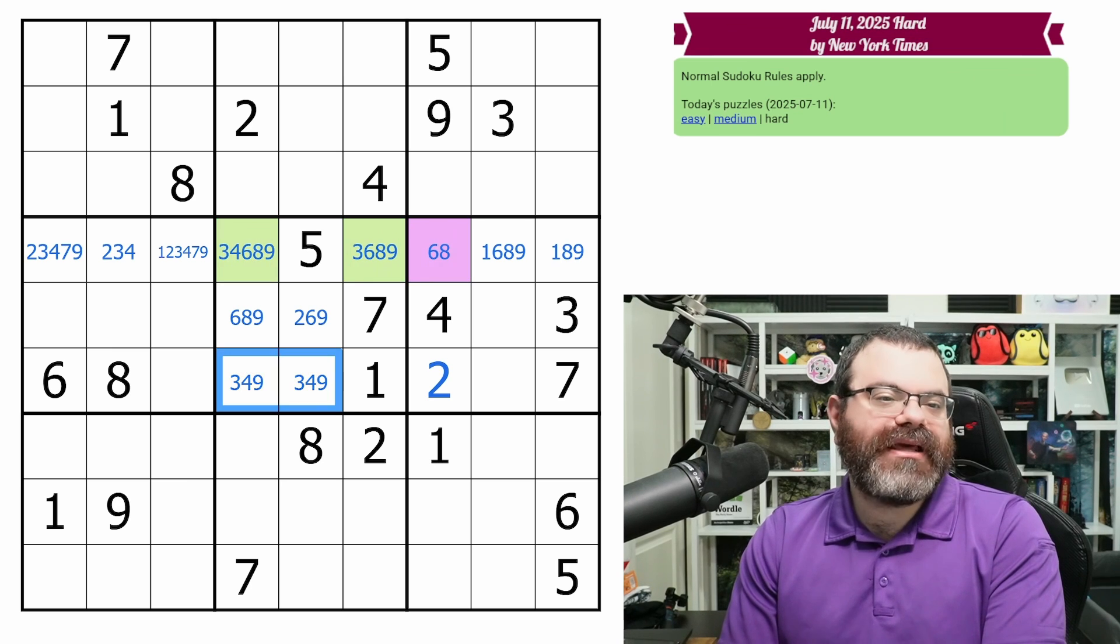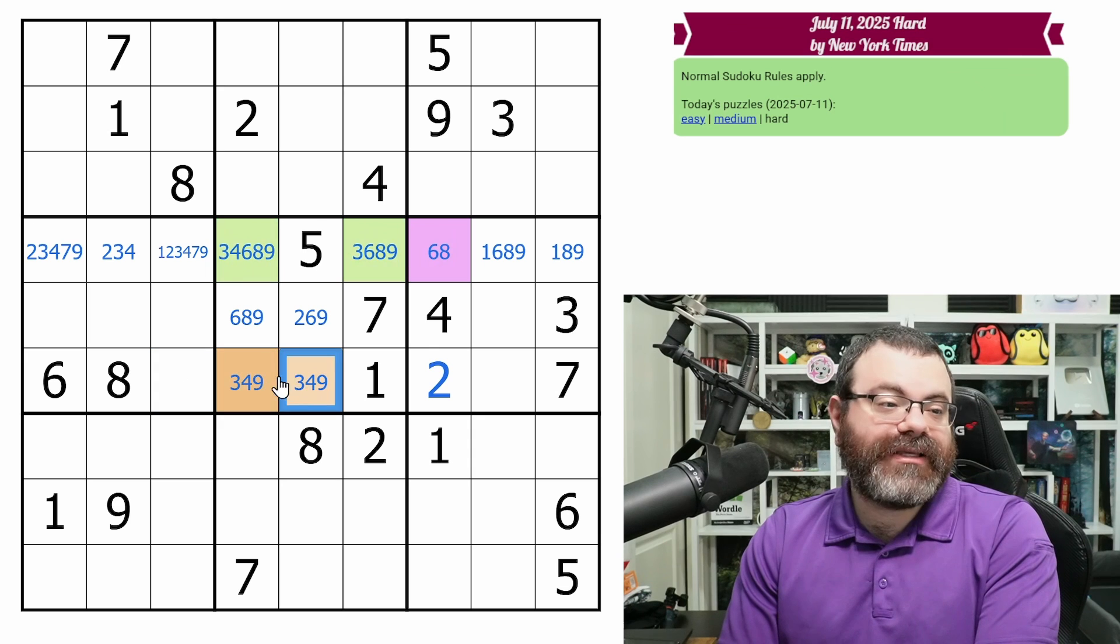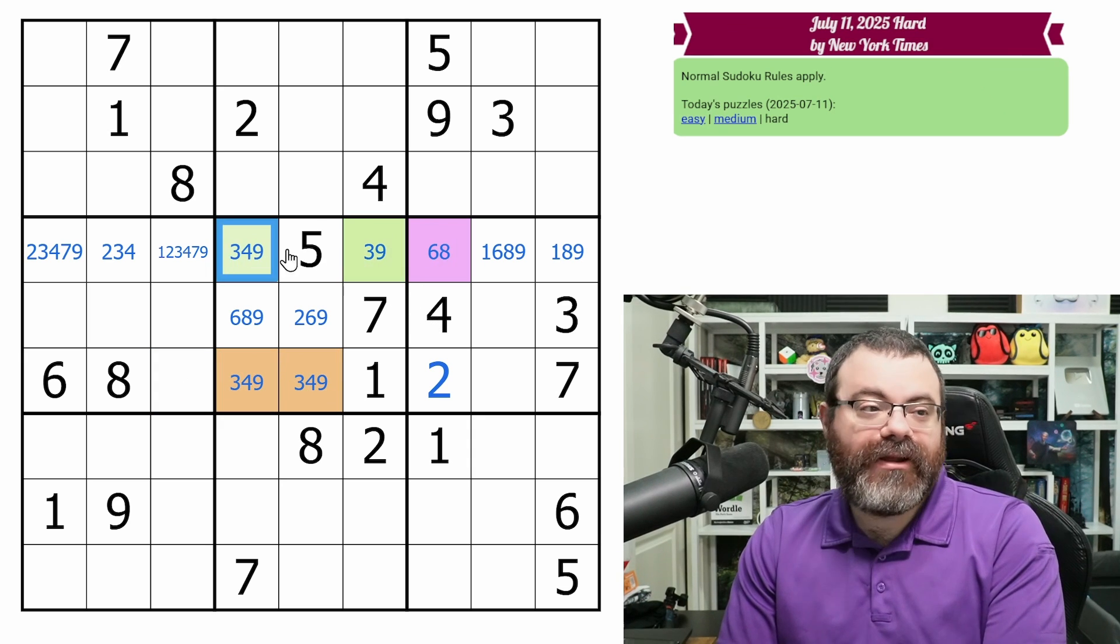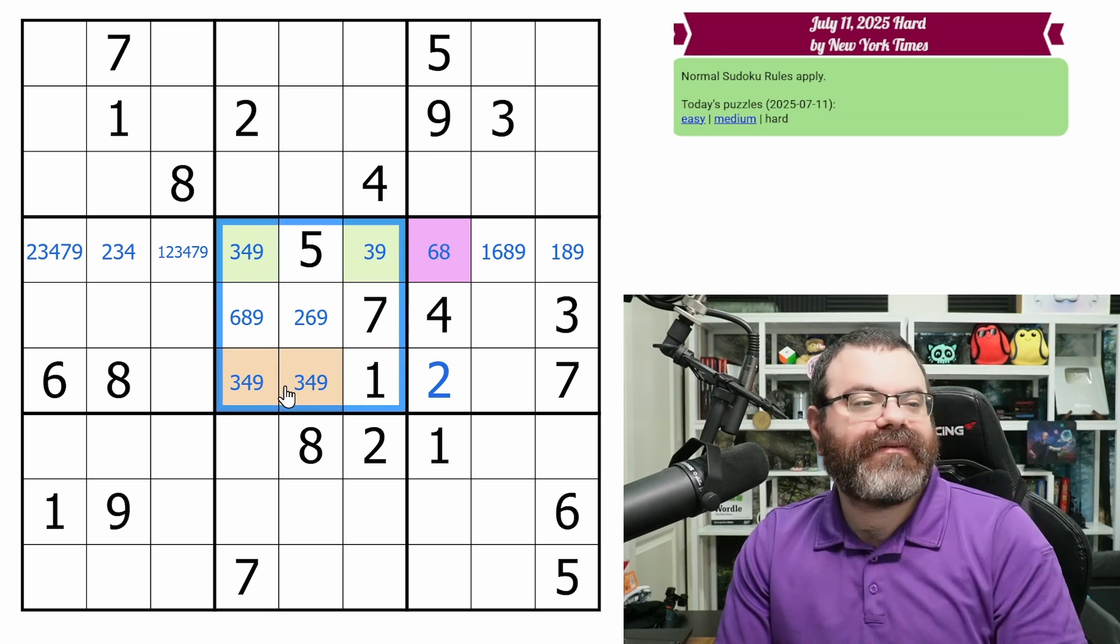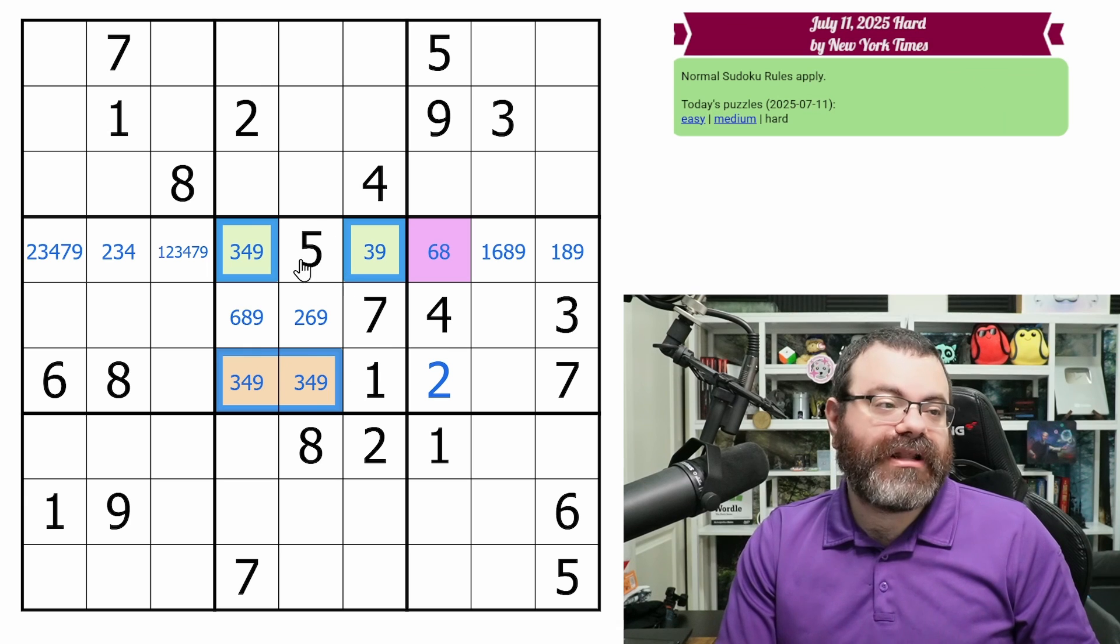So they can't both be six, eight, but that doesn't mean that one of them has to be six, eight, but we can prove that via these two. If these green cells were not six, eight, then you can see that we would have four cells in box five that need to be three, four, nine. And that also isn't going to work. We're going to run out of digits.